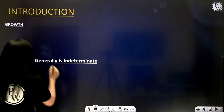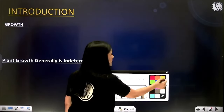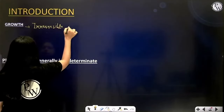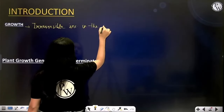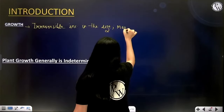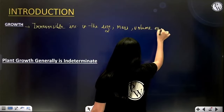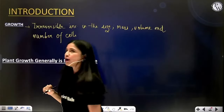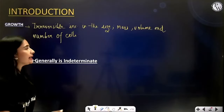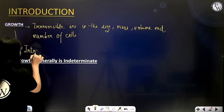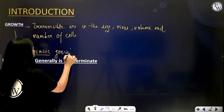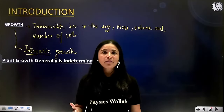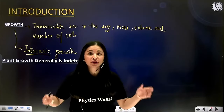So how will you define growth? Growth is simply an irreversible increase in the size, mass, or volume of cells. In living organisms, growth is intrinsic type — internal type and irreversible. Once the body has grown, it cannot shrink back to its original state. This is a defining feature of all living organisms, be it plants, animals, etc. In this chapter, we are going to focus on plant growth.